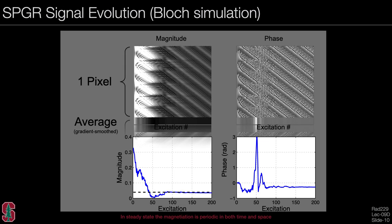Viewing the signal evolution across a pixel, the bottom shows the average magnitude and net phase of the signal from the voxel. While the approach looks extremely complicated as steady state evolves, in the steady state the magnetization becomes periodic over time and also periodic over space. This profile is shifting through the voxel.